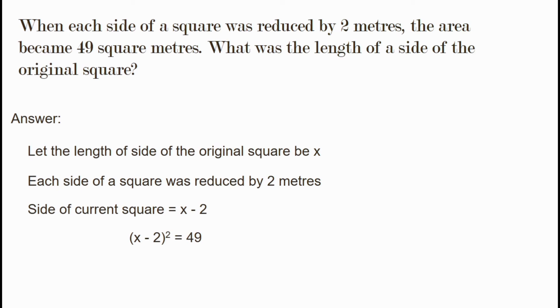Taking the square root of both sides, we get x minus 2 equals plus or minus 7.